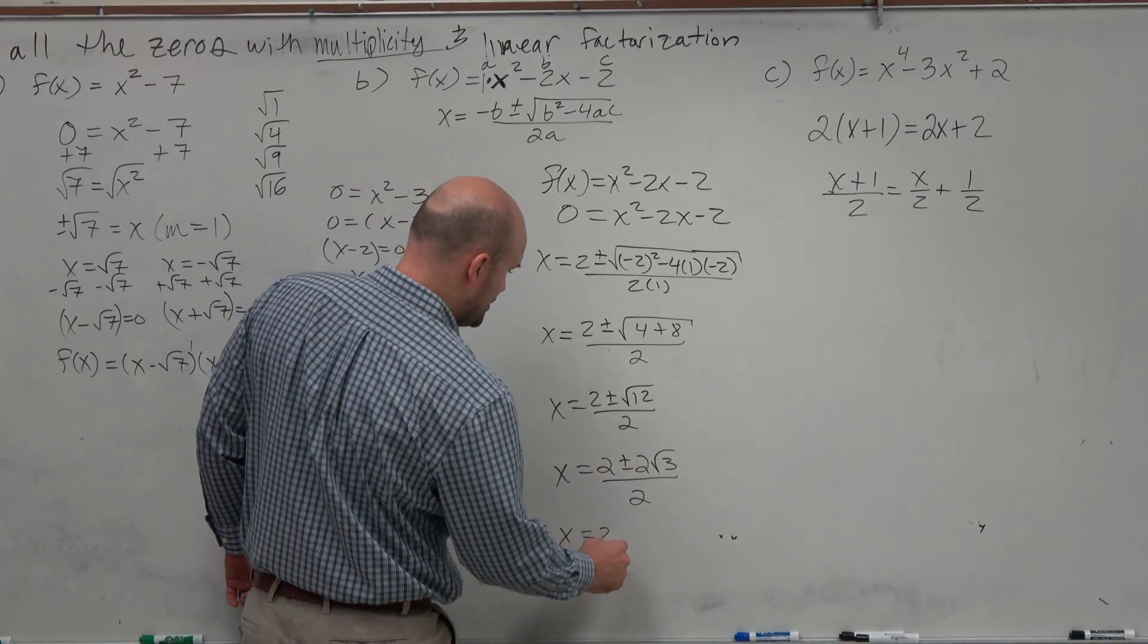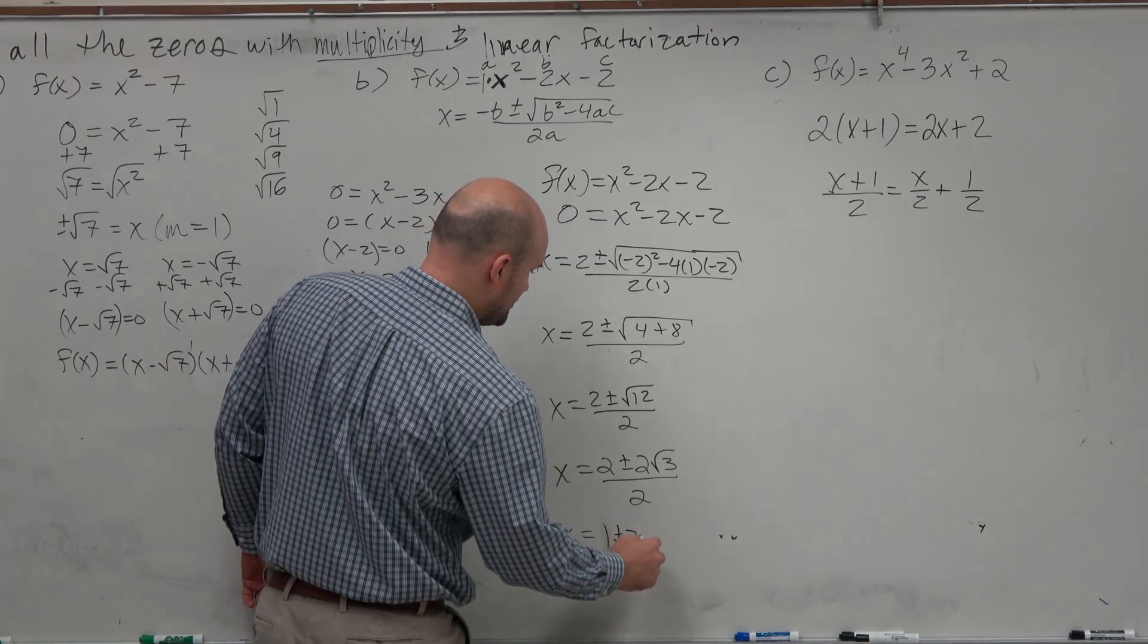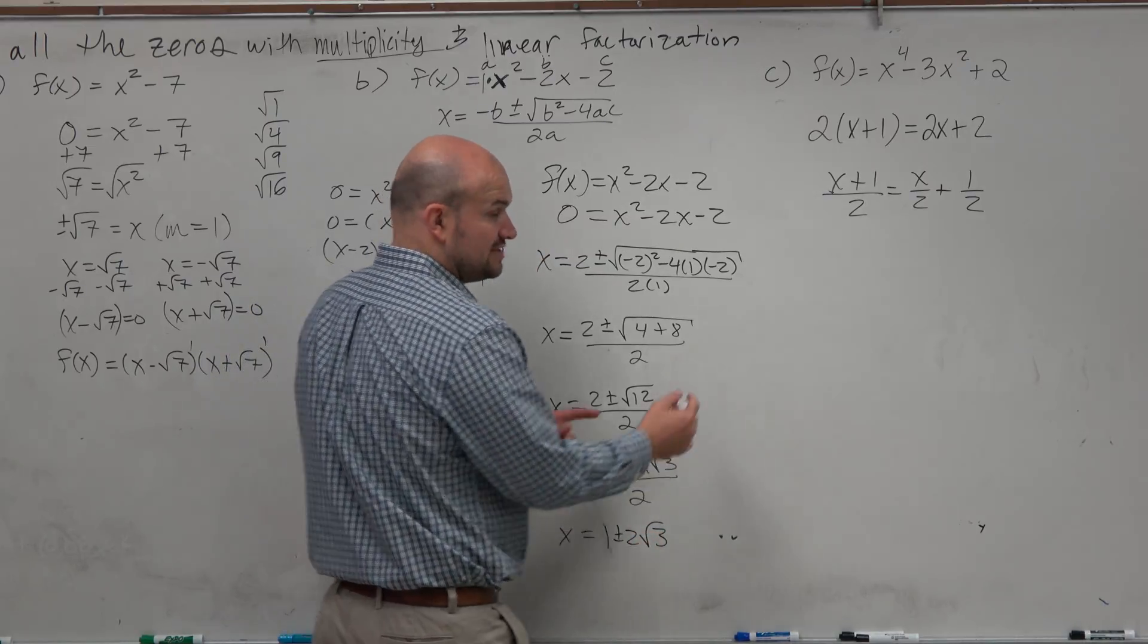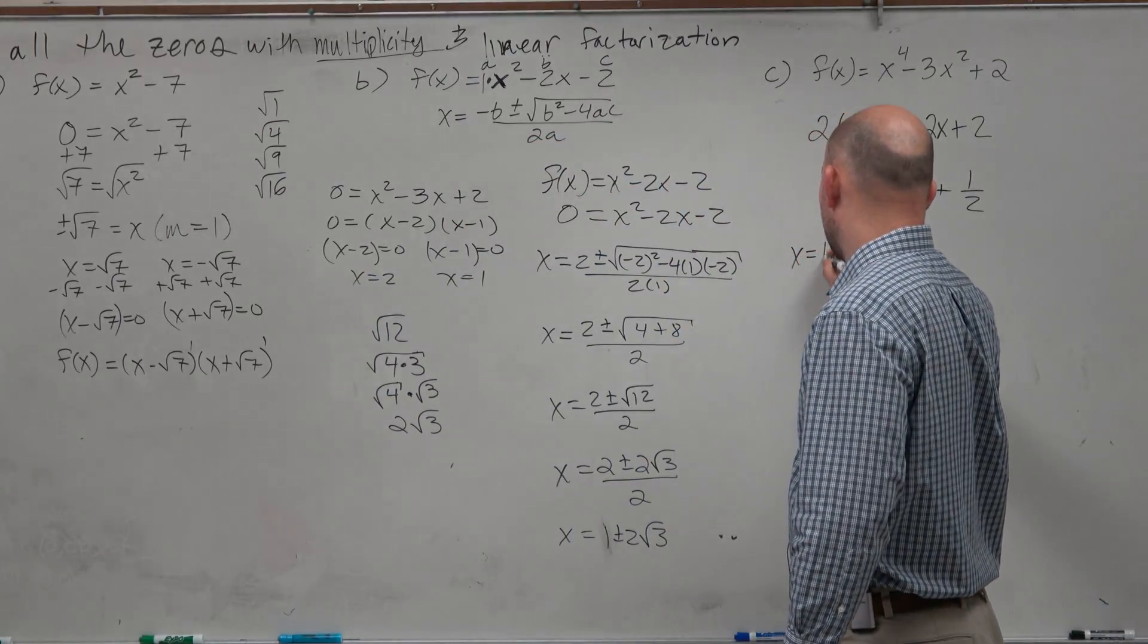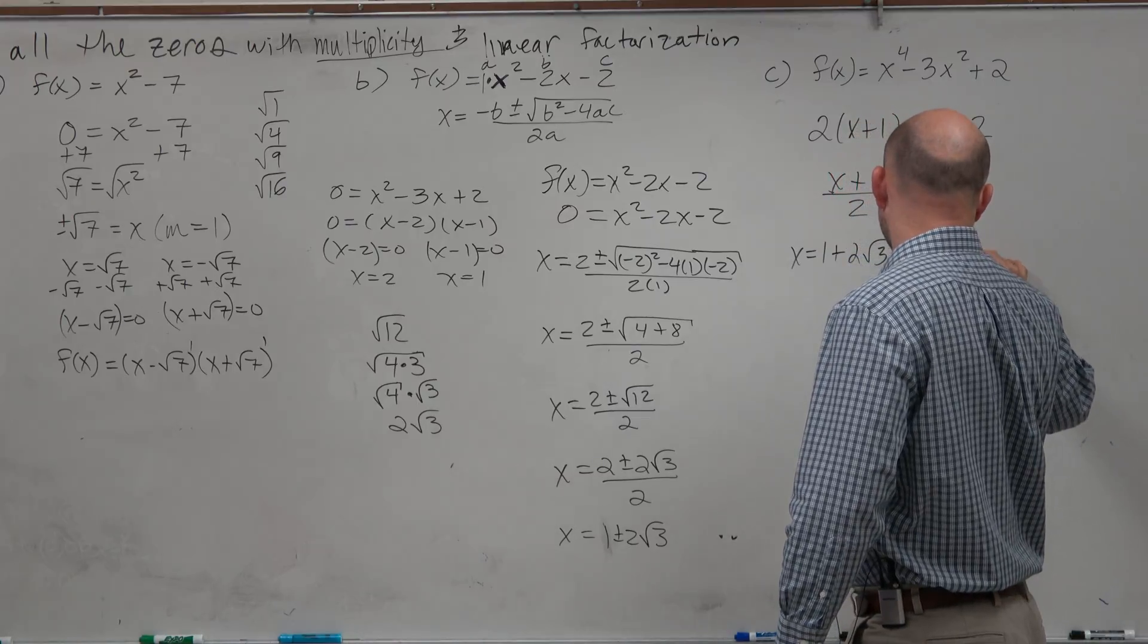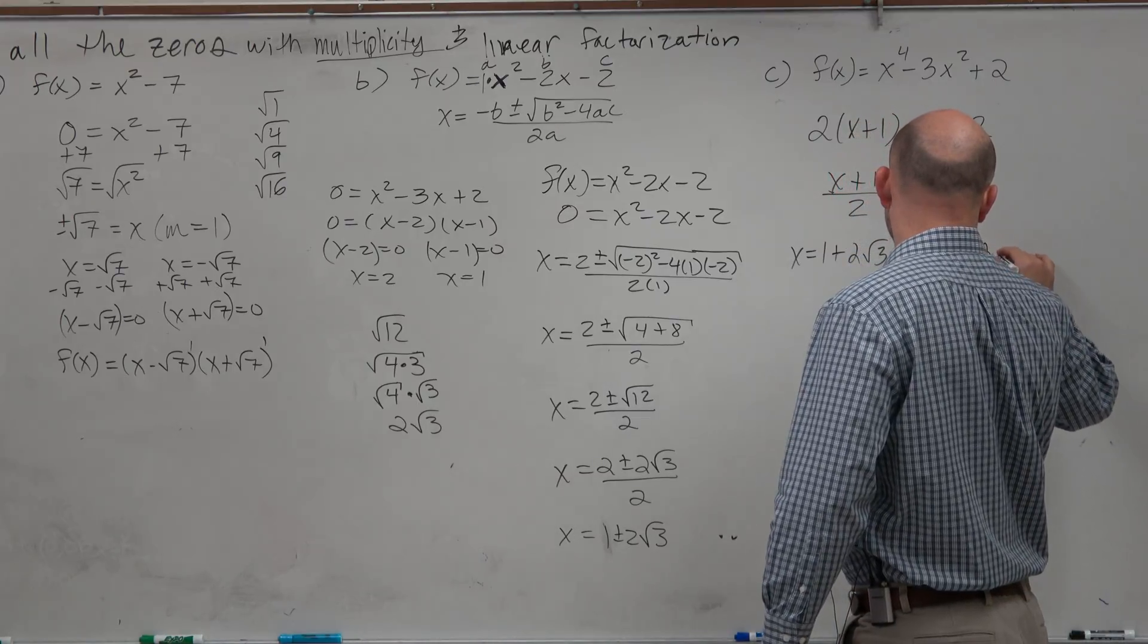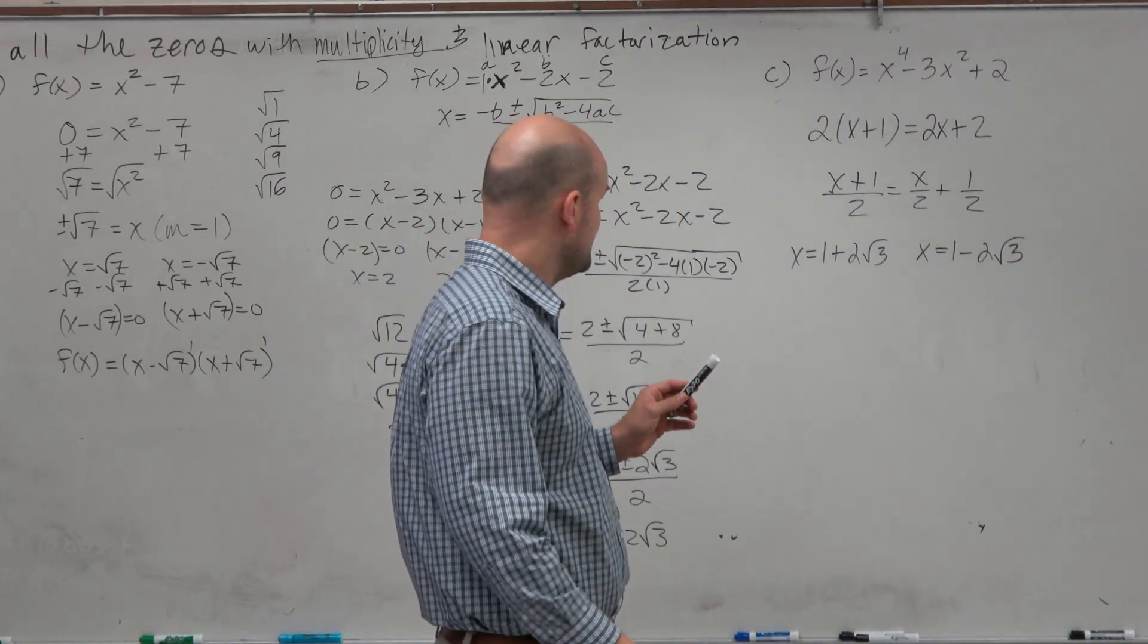So I have x equals, I'm sorry, 2 divided by 2 is 1 plus or minus 2√3. Now let's write these zeros actually out. So I have x = 1 + 2√3 and x = 1 - 2√3. So instead of doing the plus or minus, I'm just doing one each.